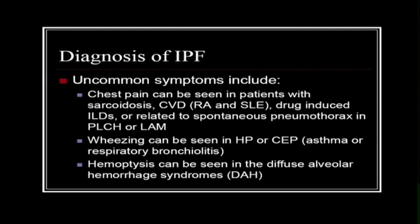Uncommon symptoms include chest pain, which can be seen in sarcoidosis, collagen vascular diseases, drug-induced interstitial lung diseases, or related to spontaneous pneumothorax as seen in pulmonary Langerhans cell histiocytosis or LAM. Wheezing can be seen in hypersensitivity pneumonitis or chronic eosinophilic pneumonia. Hemoptysis is also unusual and is typically seen in diffuse alveolar hemorrhage syndromes associated with pulmonary vasculitis.